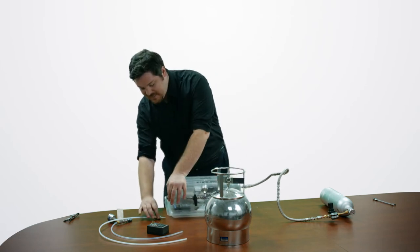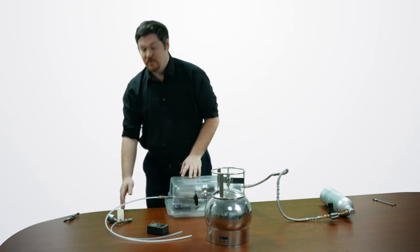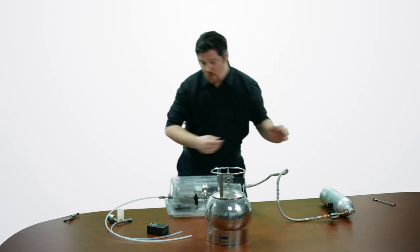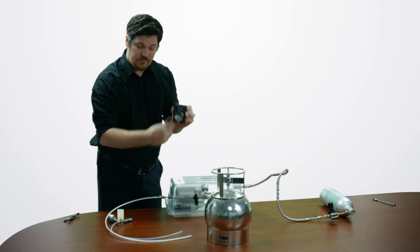So while I'm doing that, I will begin to assemble my purge. There's two purge lines. One goes directly on the in port of the flow-through detector.